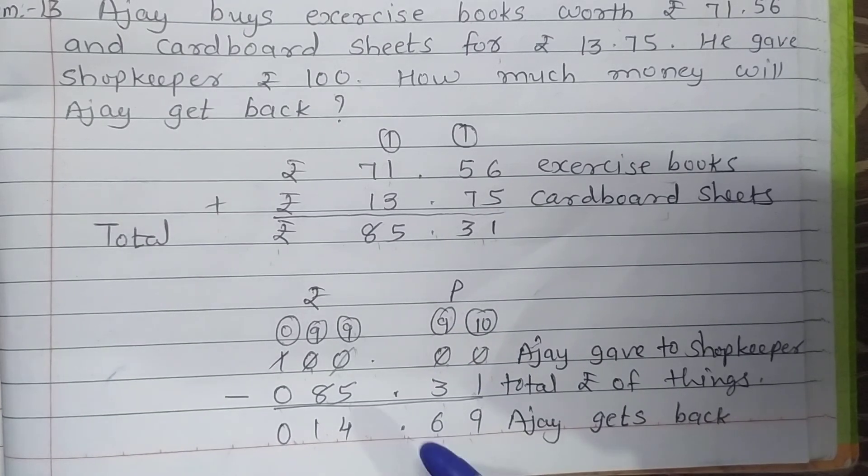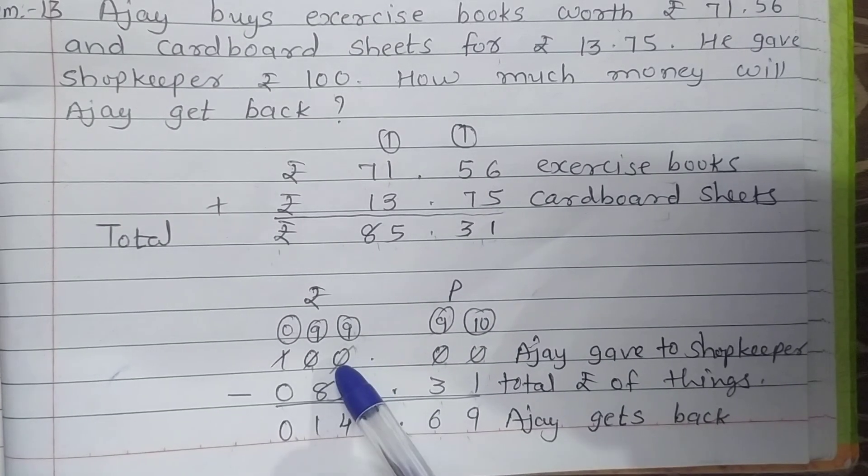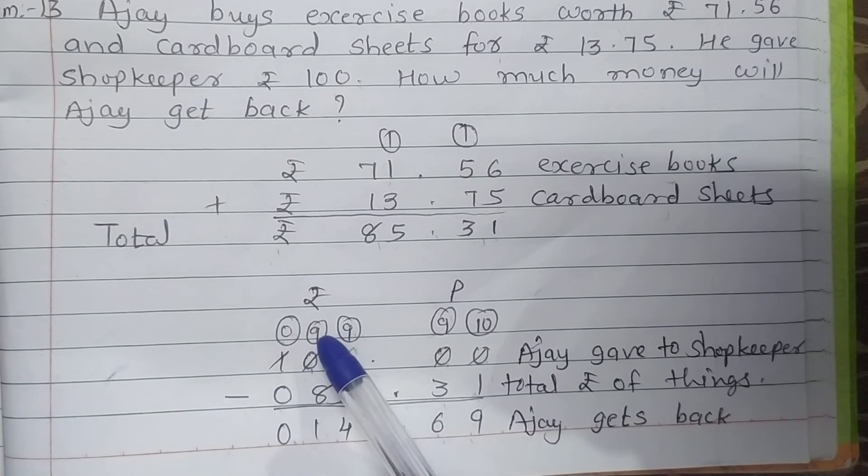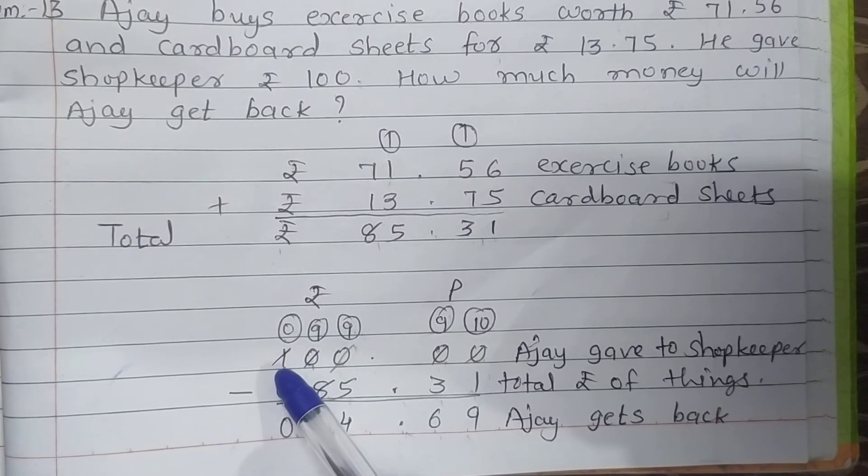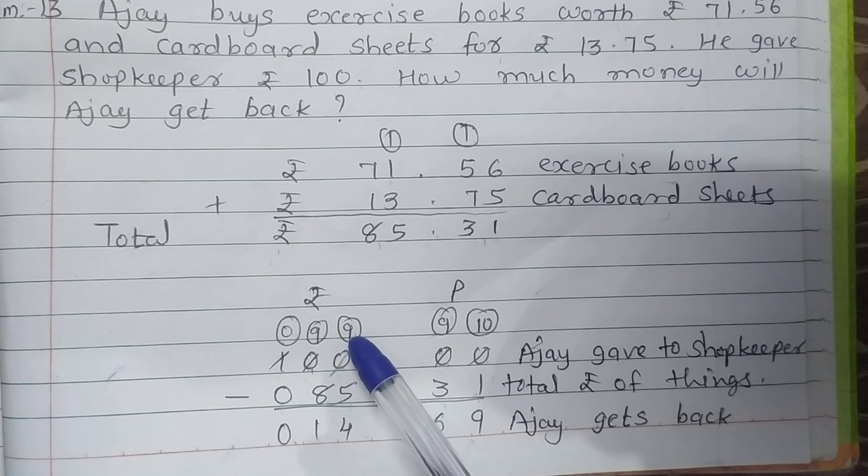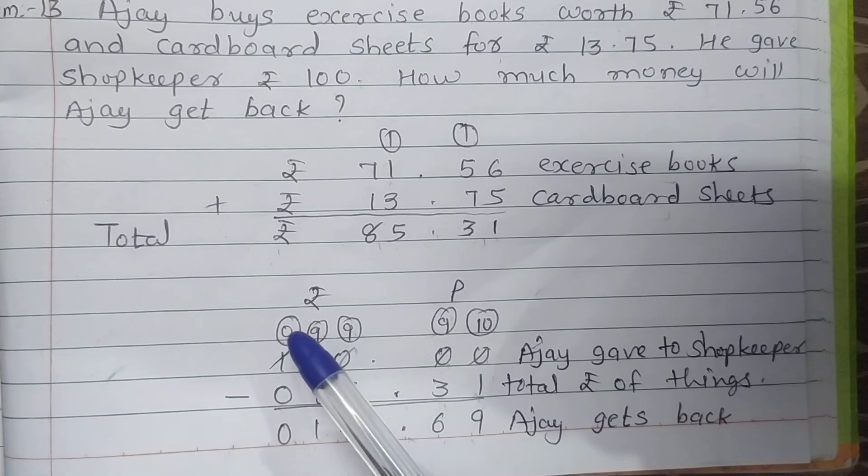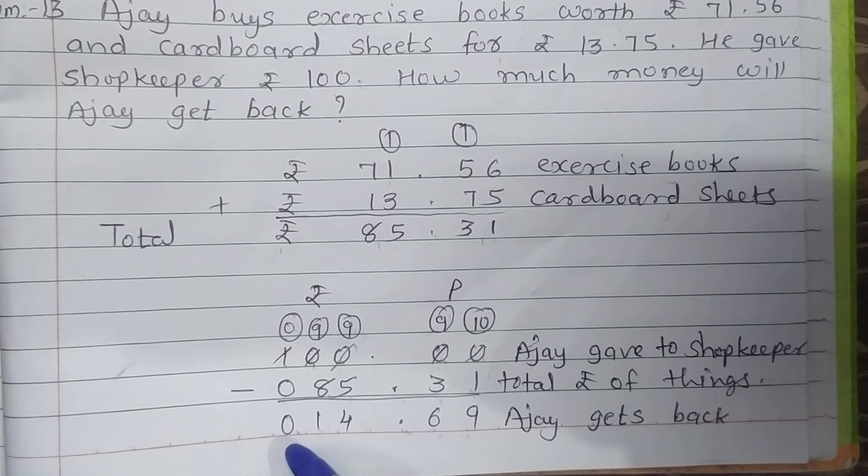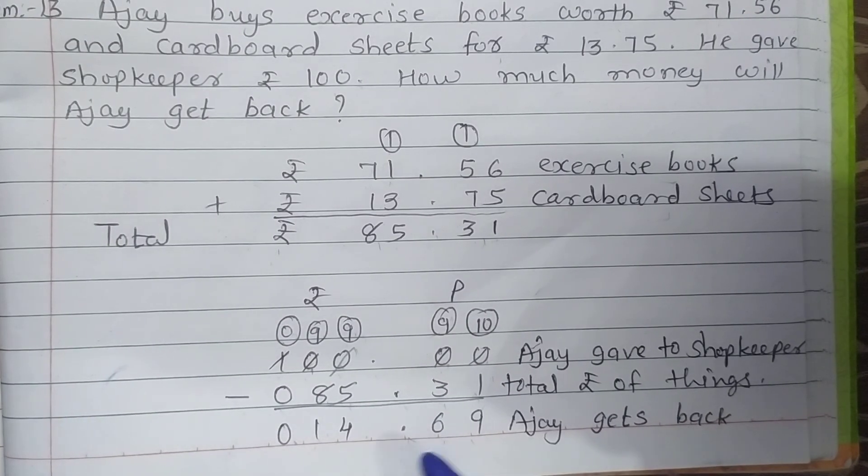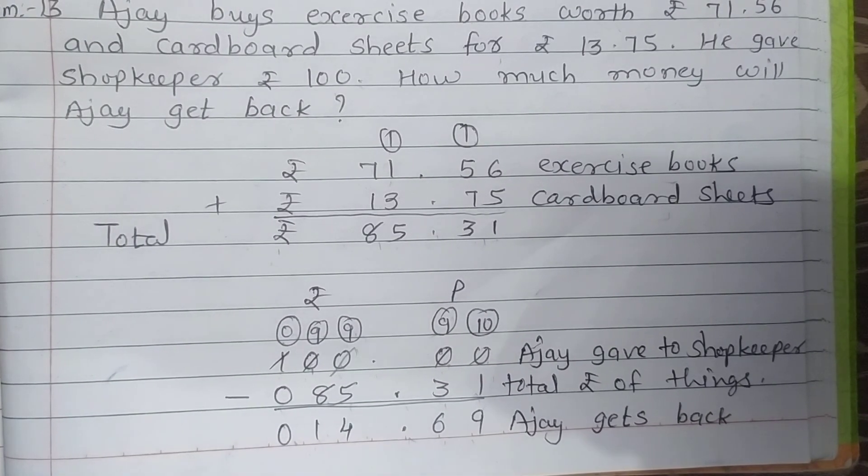10 minus 1 is 9, put 9. 9 minus 3 is 6. Point. Again 0, again 9, again 0, again 9. Number comes, cut the number and put 0. 9 minus 5 is 4, and 9 minus 8 is 1, 0 minus 0 is 0.